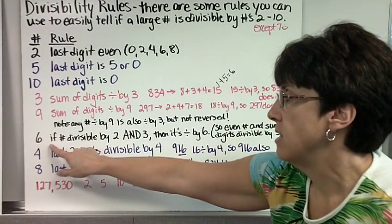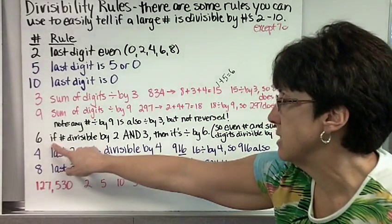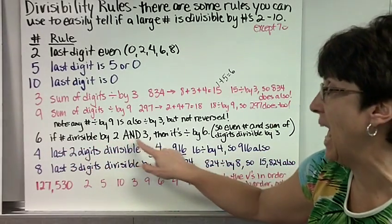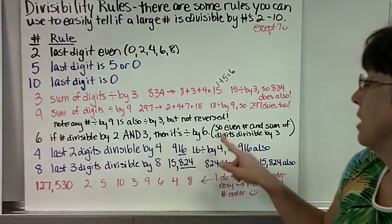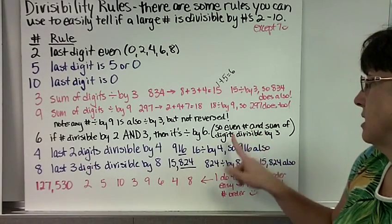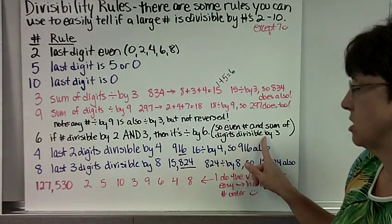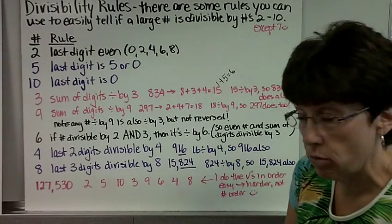6. A number is divisible by 6 if the number is divisible by 2 and 3. So it has to be an even number and the sum of the digits divisible by 3. It's not or. It has to be both.